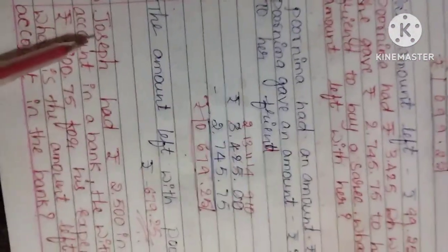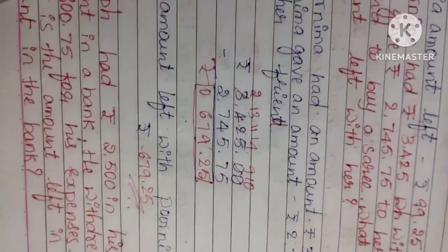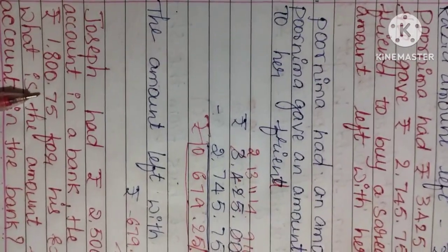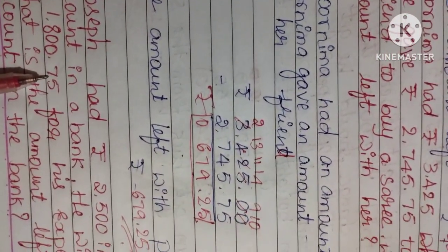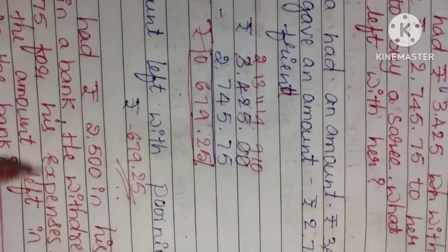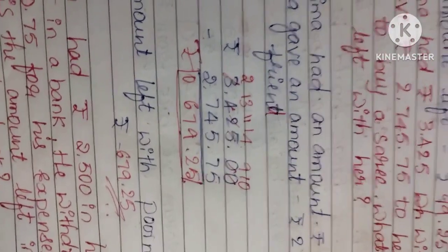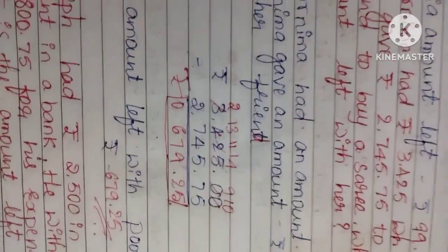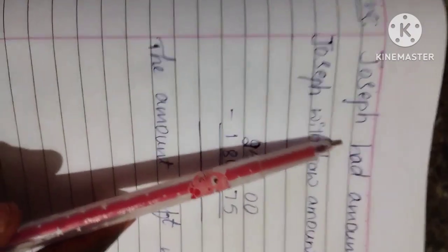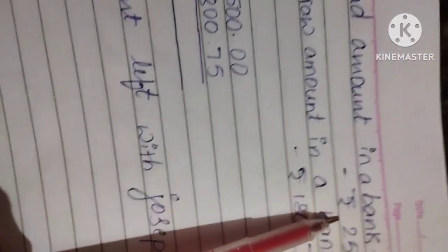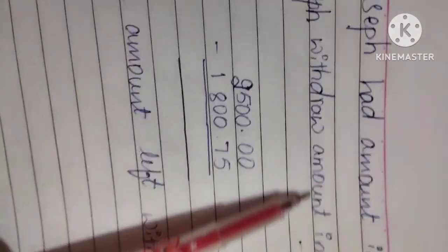Next, we have last question. Joseph had rupees 2,500 in his account in a bank. He withdrew rupees 1,875 for his expenses. What is the amount left with his account in the bank? See here. Joseph had rupees in a bank 2,500 and Joseph also withdrew amount in a bank 1,875. You can do subtraction.